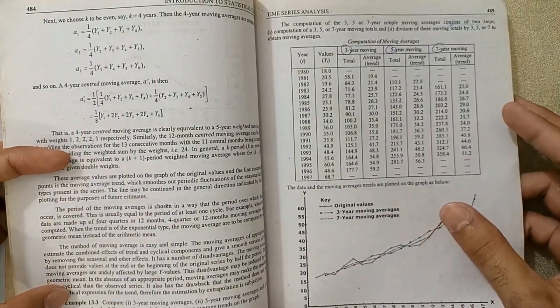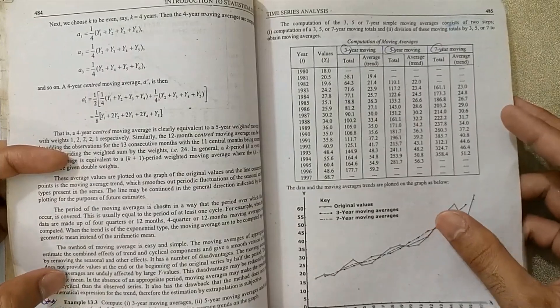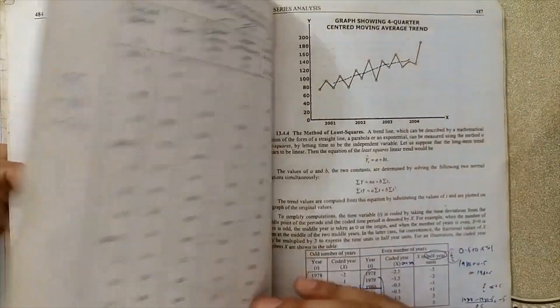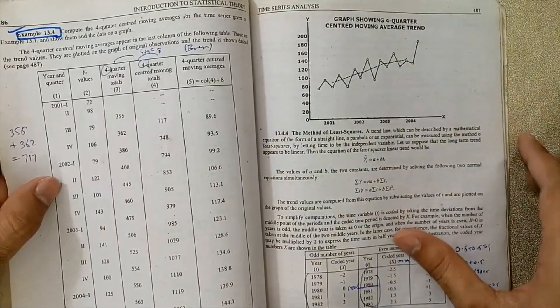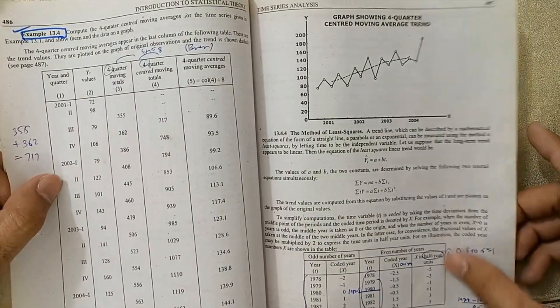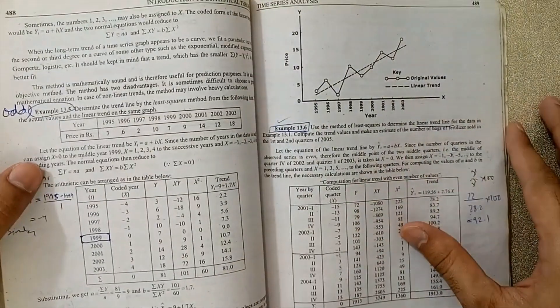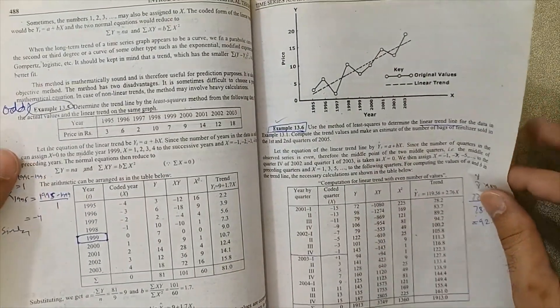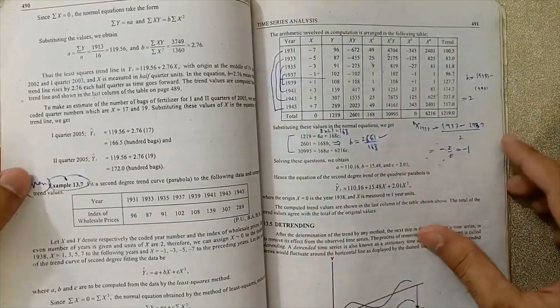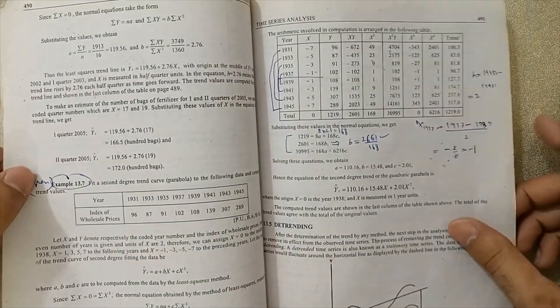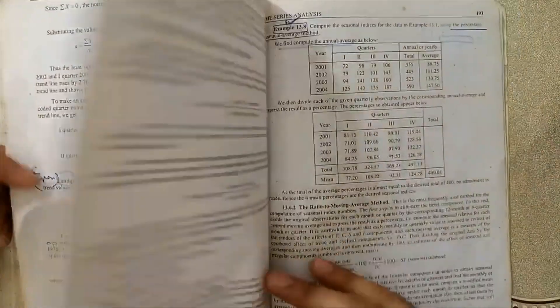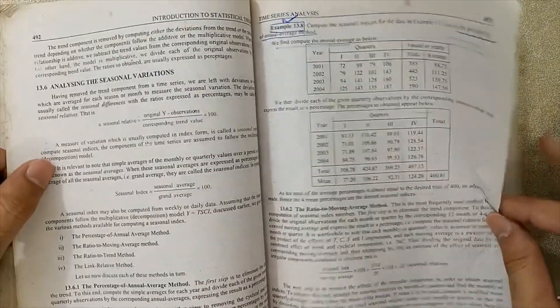Example 13.3 on three-year moving and five-year moving average method is very good example. Example 13.4 is very important, this is the even method. The method of least squares is very important, like Example 13.5 is very important. 13.6 is very important. Example 13.7 is very important, I have already discussed this lecture. Example 13.8.